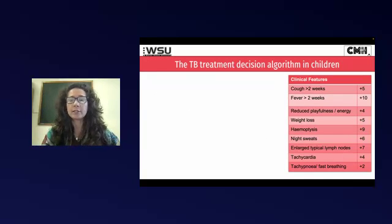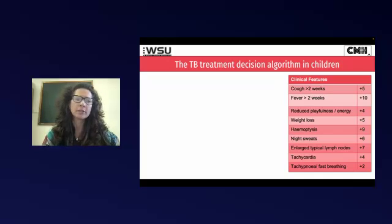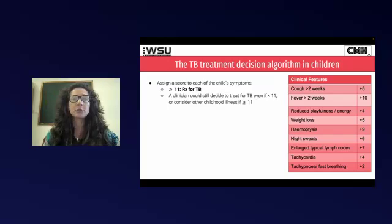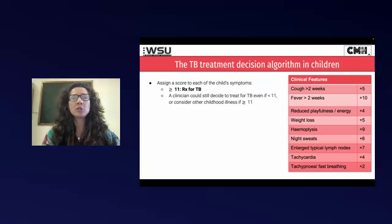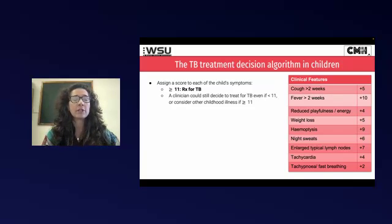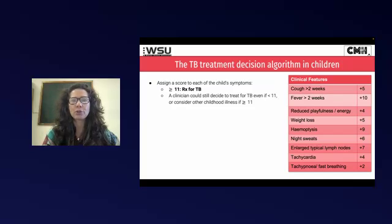What's back in — and this is also from the new guidelines — is that we did use treatment decision algorithms quite a bit in the past. They sort of go in and out of fashion. This particular one is published again to try and help people, encourage people to make a diagnosis of TB. With this particular scoring system, you score the different symptoms, and if they score more than 11, then you would definitely treat for TB. Importantly, if they score under 11, you may still use your own discretion in terms of how likely you think TB is.